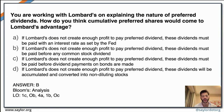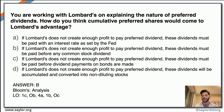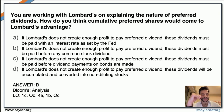The next question asks how cumulative preferred shares will come to Lombard's advantage. There is only one correct answer with no misleading options. Answer D is correct: if Lombard's does not create enough profit to pay the preferred dividend, these dividends must be paid before any common stock dividends. This is a very straightforward question — all other answers are inaccurate and incorrect. Answer D — now confirmed as B in the discussion — is the correct answer for this scenario.